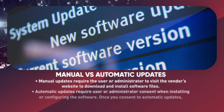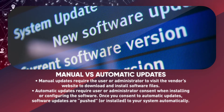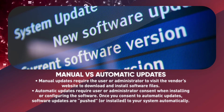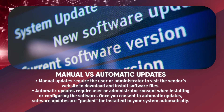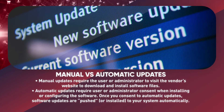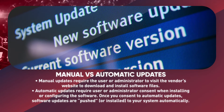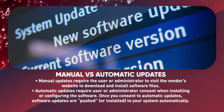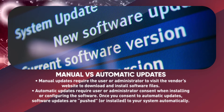What is the difference between manual and automatic updates? Users can install updates manually or elect for their software programs to update automatically. Manual updates require the user or administrator to visit the vendor's website to download and install software files. Automatic updates, on the other hand, require the user or administrator's consent when installing or configuring the software. Once you consent to automatic updates, software updates are pushed or installed to your system automatically.